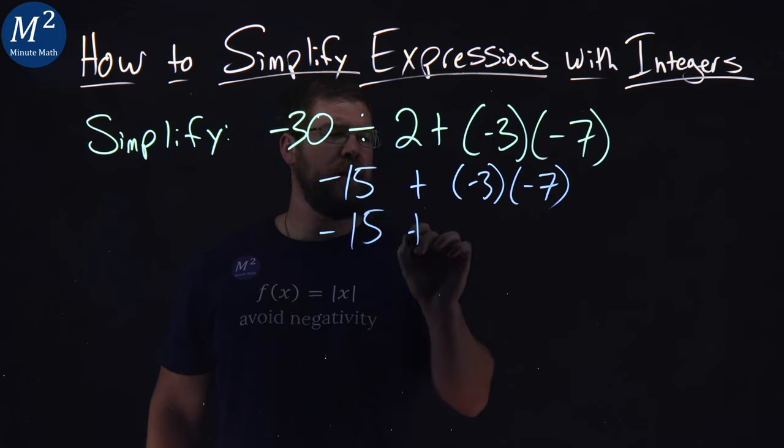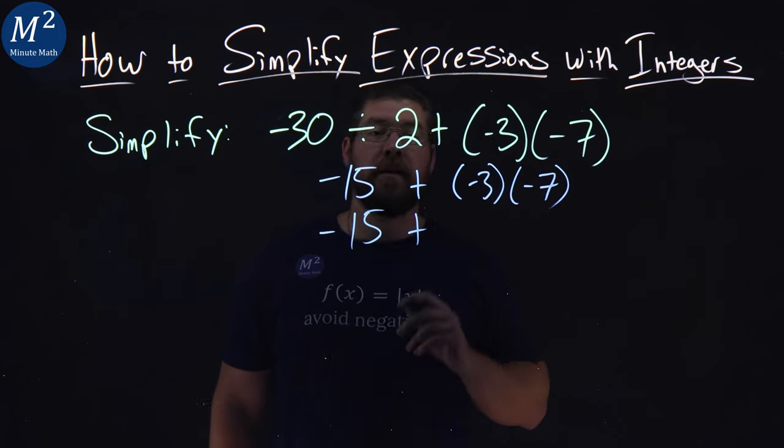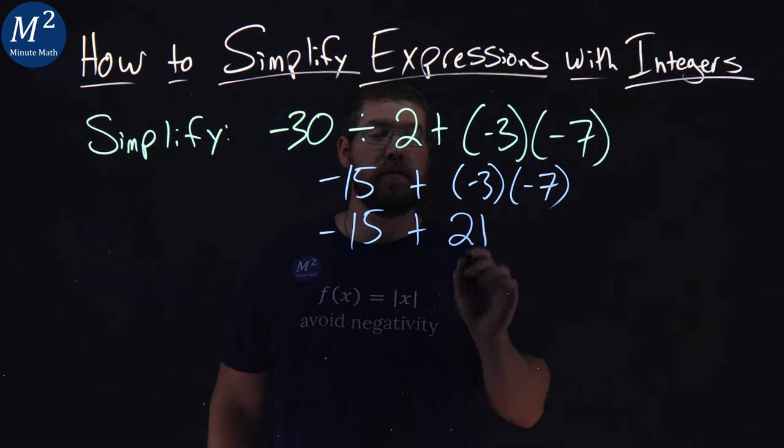Negative 15 plus - multiplication comes next - negative 3 times negative 7 is positive 21.